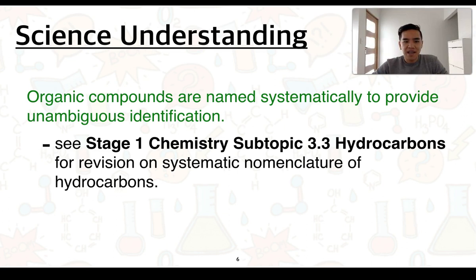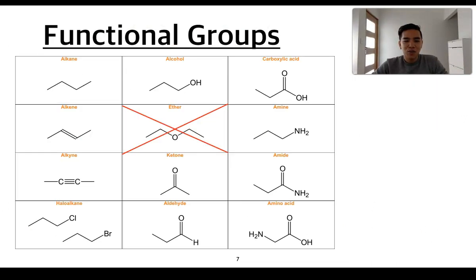The next science understanding is that organic compounds are named systematically to provide unambiguous identification. This was covered in stage 1 chemistry, subtopic 3.3 on hydrocarbons, and I'd like you to refer back to that video to recall how systematic nomenclature works. From here, it's important to note that we group organic compounds based on certain groups called functional groups. Functional groups can consist of bonds, atoms, or groups of atoms that often determine the chemical properties of a molecule, and those chemical properties determine how compounds react with other molecules.